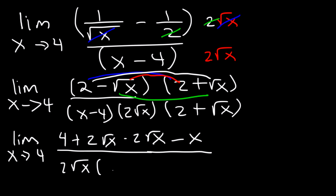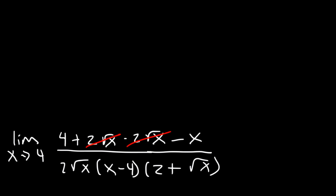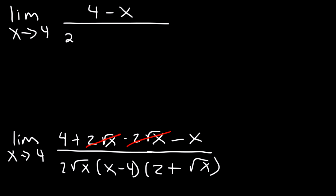Now we're not going to change anything on the bottom — we're simply going to rewrite it exactly the way it was. The two middle terms, 2 root x and negative 2 root x, these cancel; they add up to 0. So on the top we have 4 minus x, and on the bottom nothing changed.